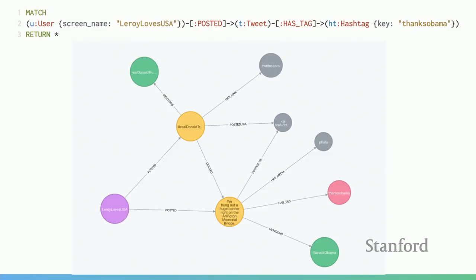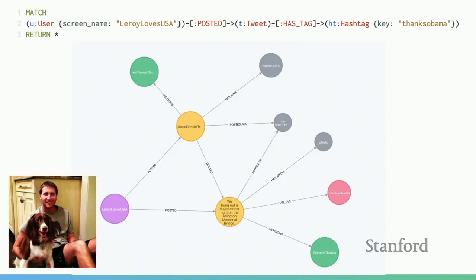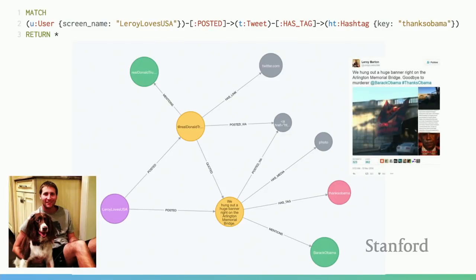With this data in Neo4j, the NBC team had journalistic hypotheses they wanted to test. One example: here's a tweet from Leroy Loves USA talking about hanging a banner on a bridge in Washington D.C. and taking credit for it. That banner actually was hung on a bridge in Washington D.C. We saw a lot of these troll accounts trying to latch onto events that occurred in real life — this bridge between troll world and reality is pretty interesting.